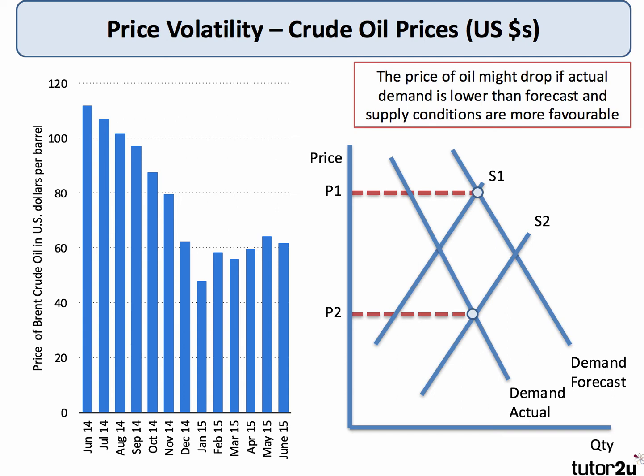For example, we've seen in recent times a severe fall in the price of crude oil. This chart takes us from June 2014 through to June 2015, and you can see in just one year the price of Brent crude oil in US dollars per barrel fell from over $110 in June 2014, as low as $45 to $50 before recovering a little bit. In some world oil markets the price fell even more.